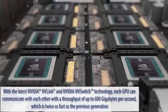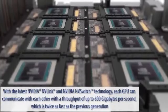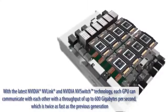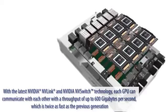With the latest NVIDIA NVLink and NVIDIA NVSwitch technology, each GPU can communicate with each other with a throughput of up to 600 GB per second, which is twice as fast as the previous generation.